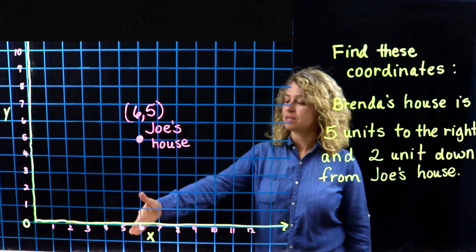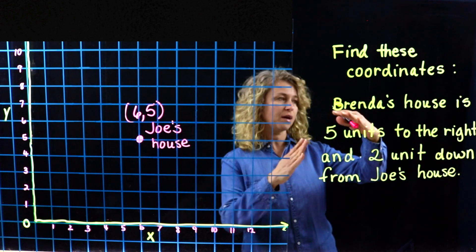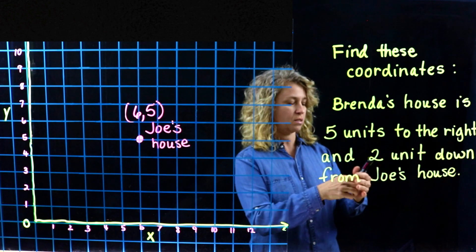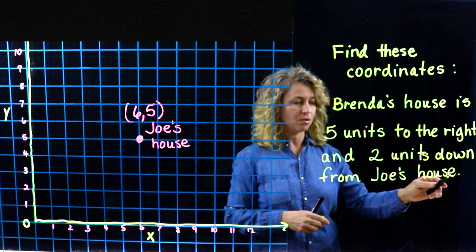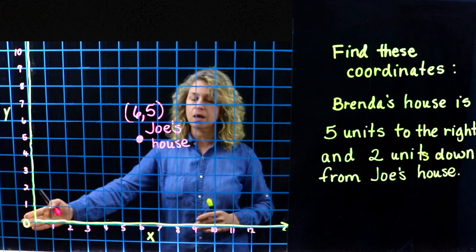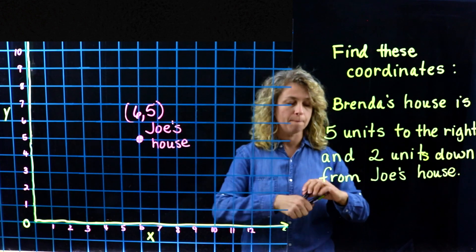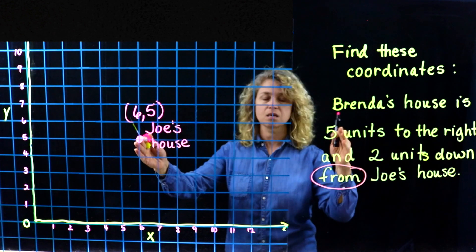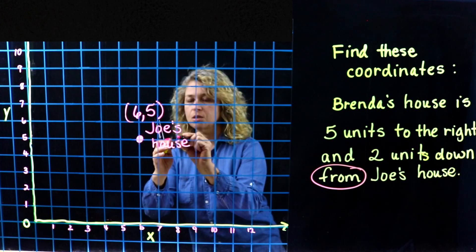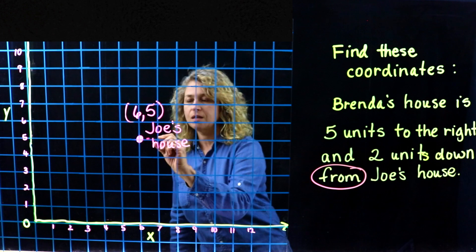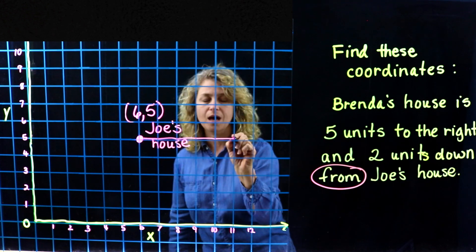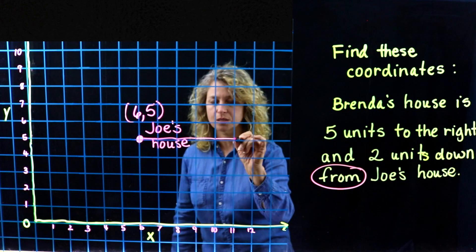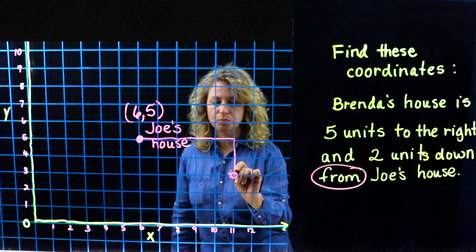Joe's house location is six comma five and we're trying to find the coordinate of Brenda's house. Brenda's house is five units to the right and two units down from Joe's house. Normally we would start at the origin, but since it says 'from,' we're going to start from Joe's house. From his house, five units to the right: one, two, three, four, five — and two units down: one, two.